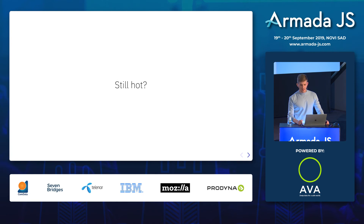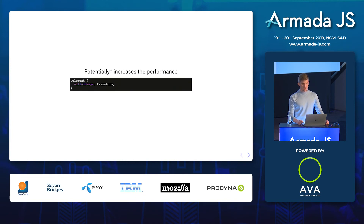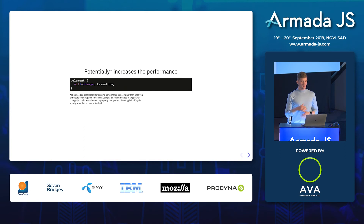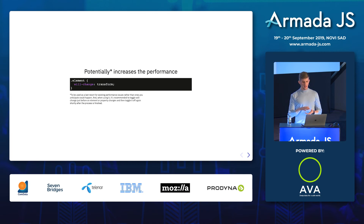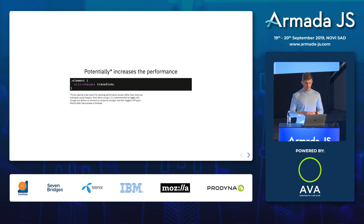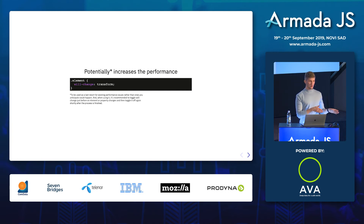One last trick: if you did all of that and your laptop is still hot, try using the will-change property. It says: hey browser, I'm going to animate this property on this object — so you may or may not optimize for it. It can put items on separate layers, which uses more memory, and you're never sure what will happen. The guide says: if you add will-change, make sure you remove it when you don't need it anymore, because it might shoot you in the leg.